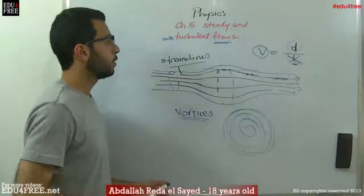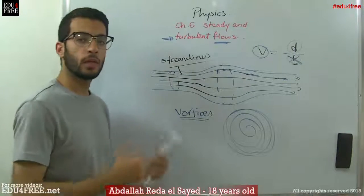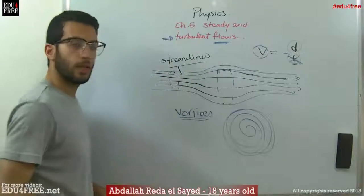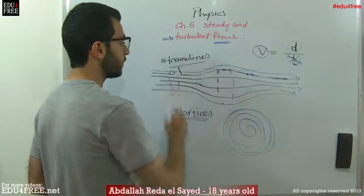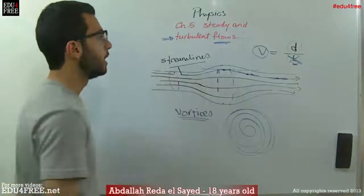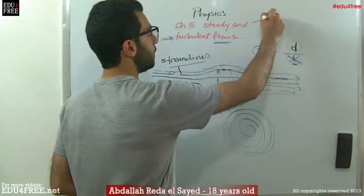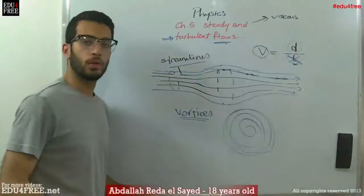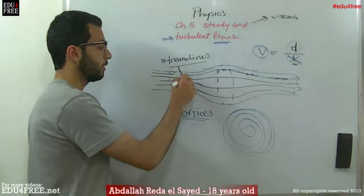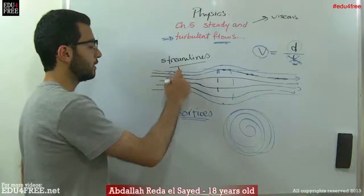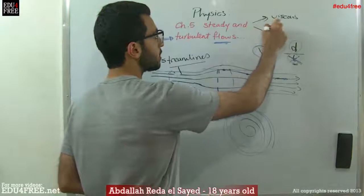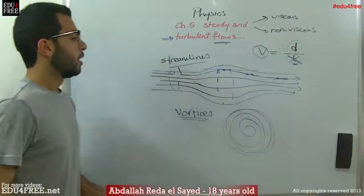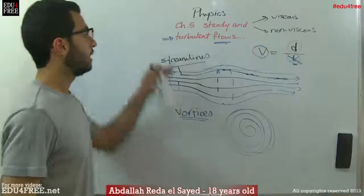Finally, steady flow actually contains two subtypes. Between the streamlines or layers there can be friction that slows down the flow of the liquid — this is called a viscous flow, according to viscosity. If there is no friction between the layers or the sides of the tube, it is called a non-viscous flow. That is all we have about the steady flow.